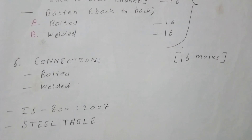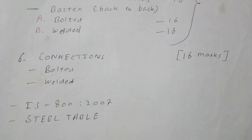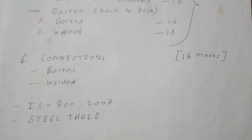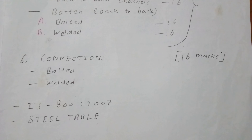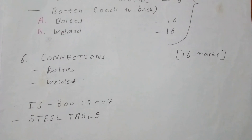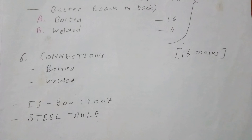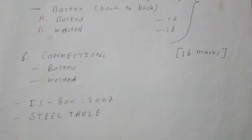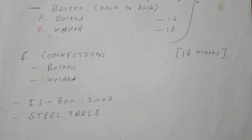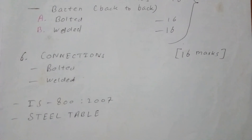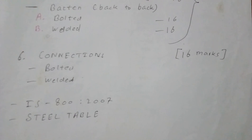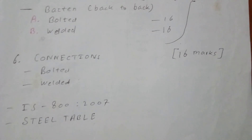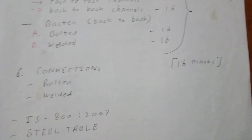The last topic is Connections, which includes bolted and welded connections, each with many different types of numericals. The marks are also uncertain — there may be two or more questions within a single 16-mark question. If you just want to pass, don't go for connections. If you want to score high, you may consider it.